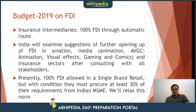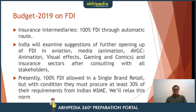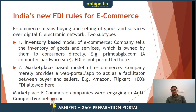Budget 2019 brought new FDI changes. First, 100% FDI through the automatic route is now permitted in insurance intermediaries — previously this was 74% only. India will also examine further opening up of FDI in aviation, media, and insurance sectors after consulting stakeholders. Presently 100% FDI is allowed in single brand retail, but with the condition that they must procure at least 30% of their requirements from Indian MSMEs. This condition may get relaxed over time as single brand retail units find it difficult to source 30% locally.